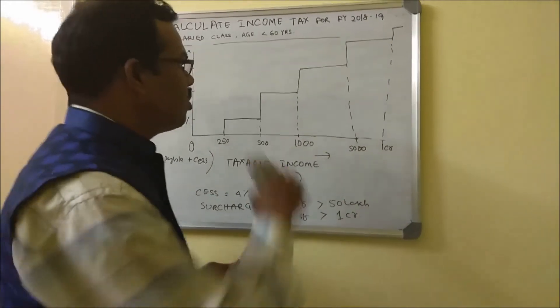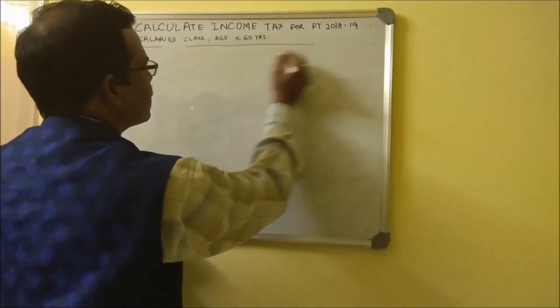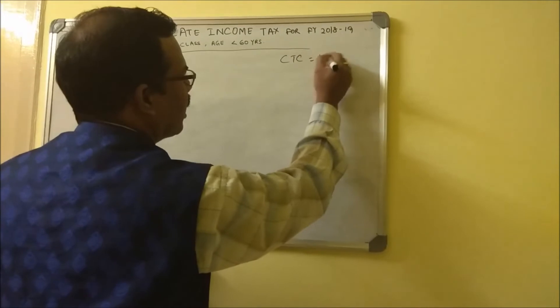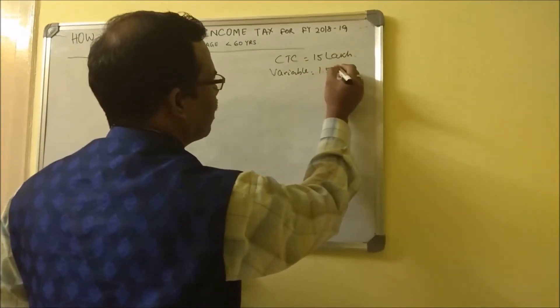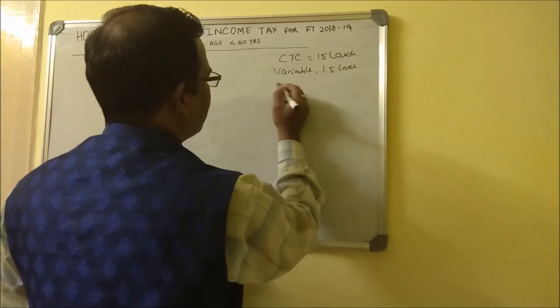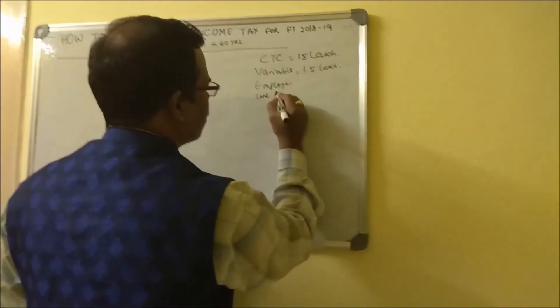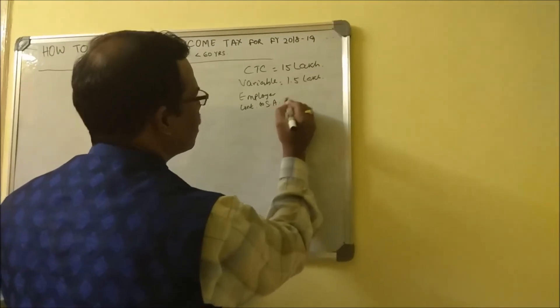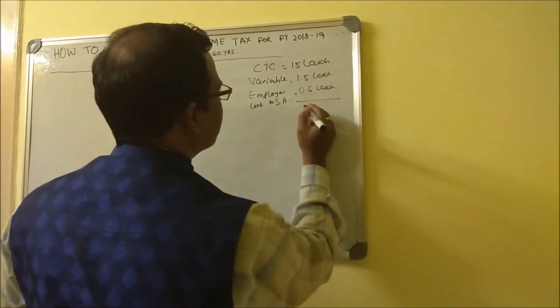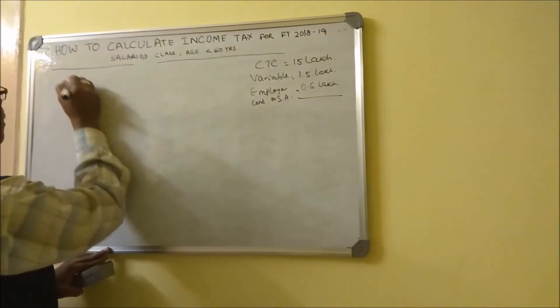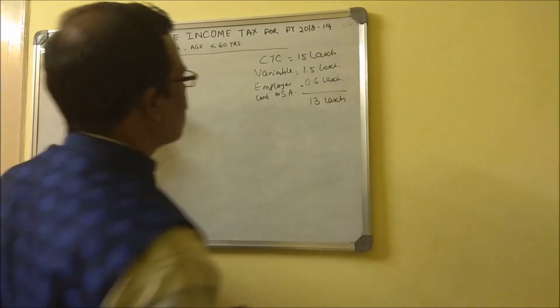I will take you through a case study and we will calculate how the tax payable works. In our case study, let's say the CTC is 15 lakh where you have a variable component of 1.5 lakh and the employer contribution to superannuation funds is 0.5 lakh. If you are starting at the month of April where the financial year begins, then your gross income is 13 lakh.